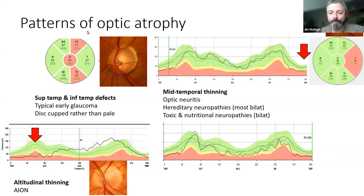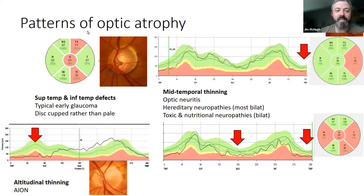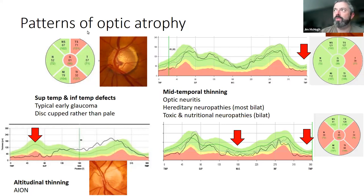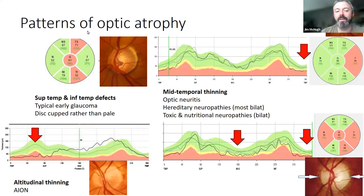This pattern is bowtie thinning. Bowtie thinning is what you get from crushing the chiasm — you squash the nasal fibres that are decussating through the chiasm and this is the pattern you get. You also get it on the contralateral side to a tract lesion. It's an awful lot easier to see bowtie thinning on OCT than it is down the slit lamp, where it's really difficult to identify bow tie pallor. On OCT it's unambiguous.